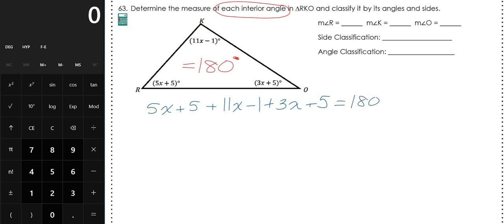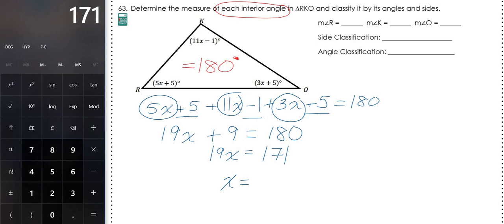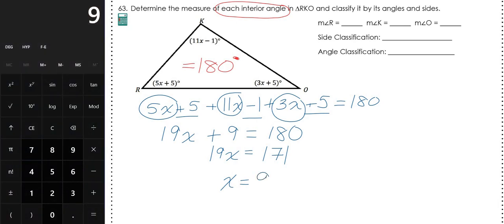Start by combining like terms. For the x terms: 5x + 11x + 3x = 19x. For the constants: 5 − 1 + 5 = 9. So we have 19x + 9 = 180. Subtract 9 from both sides: 19x = 171. Divide both sides by 19 using the calculator: 171 ÷ 19 = 9. Nice whole number.